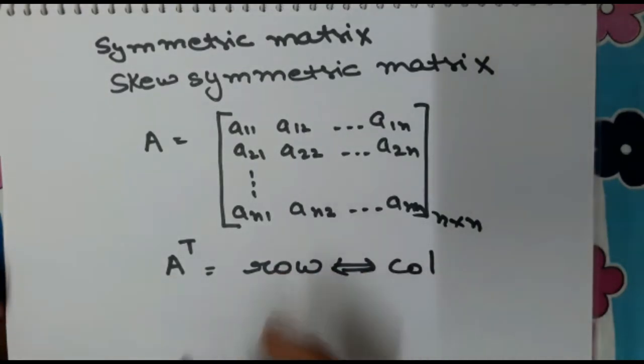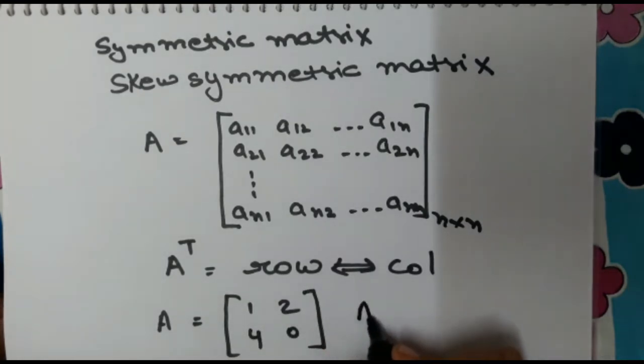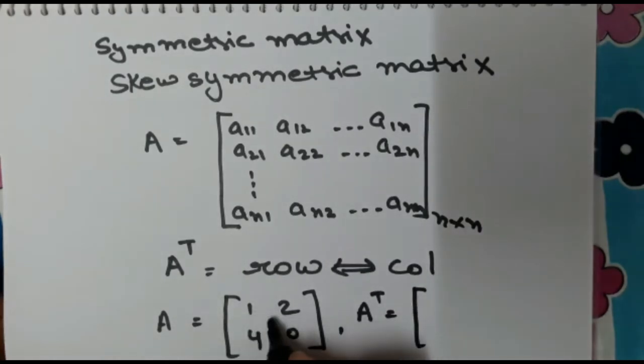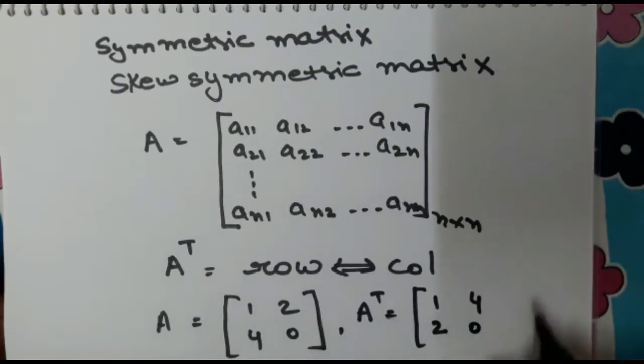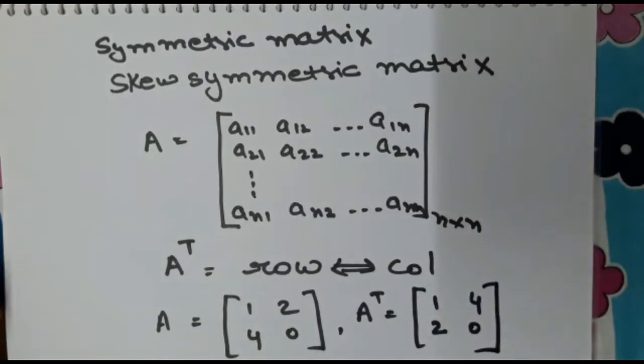For example, A is a matrix 1, 2, 4, 0. Then A transpose is: this is the row, we change it, 1, 2. This is the row, we change it, column 4, 0. This is A transpose.